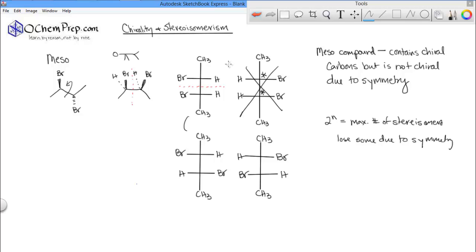Again, these are, these will be the relationship between this one up here and this one down here. These are diastereomers, and these two are enantiomers, but these two are identical, so we don't count them as stereoisomers.